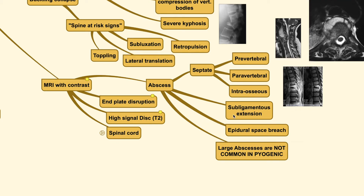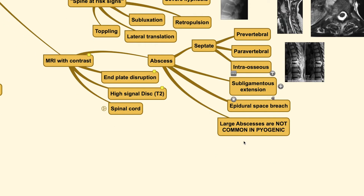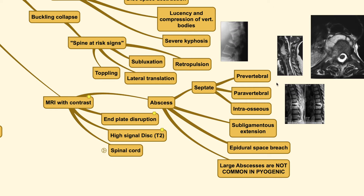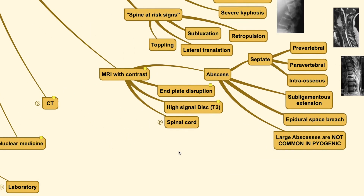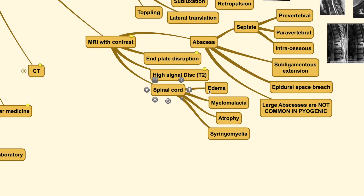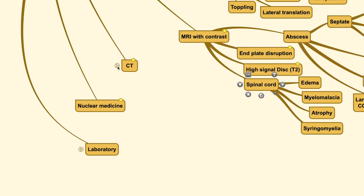The abscess usually extends through a sub-ligamentous type of extension and may even bridge the epidural space. Large abscesses are usually not common in pyogenic infection and therefore can help us determine the type of infection, because in spine tuberculosis the abscess is typically very large and can reach a very high volume. MRI with contrast also helps show end plate disruption with high signal disc, and the spinal cord may reveal findings of edema, myelomalacia, atrophy, or even formation of a syrinx.